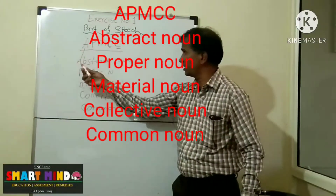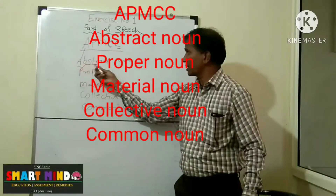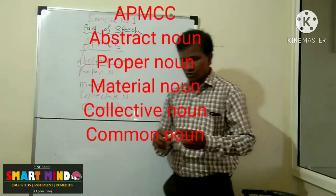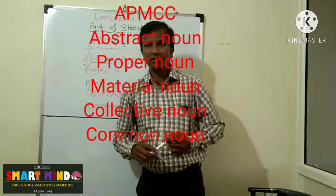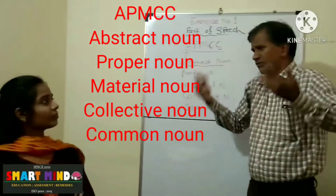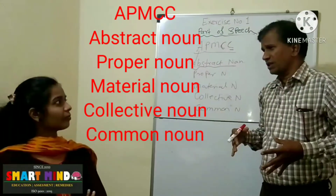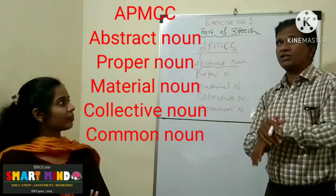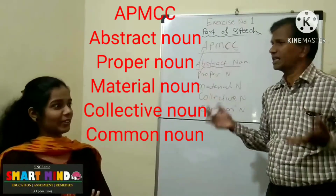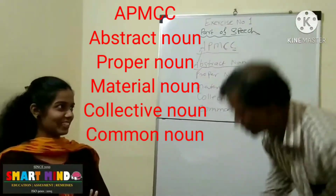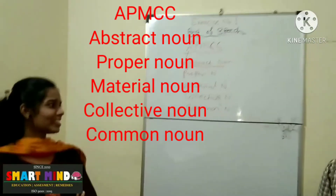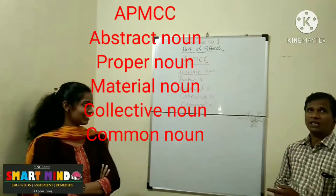Let's study the abstract noun. Do you know what are feelings, suggestions? Things which you can feel but cannot see, cannot touch — like honesty. Honesty is something you can feel but you can't see or touch. And happiness — for example, khushi.